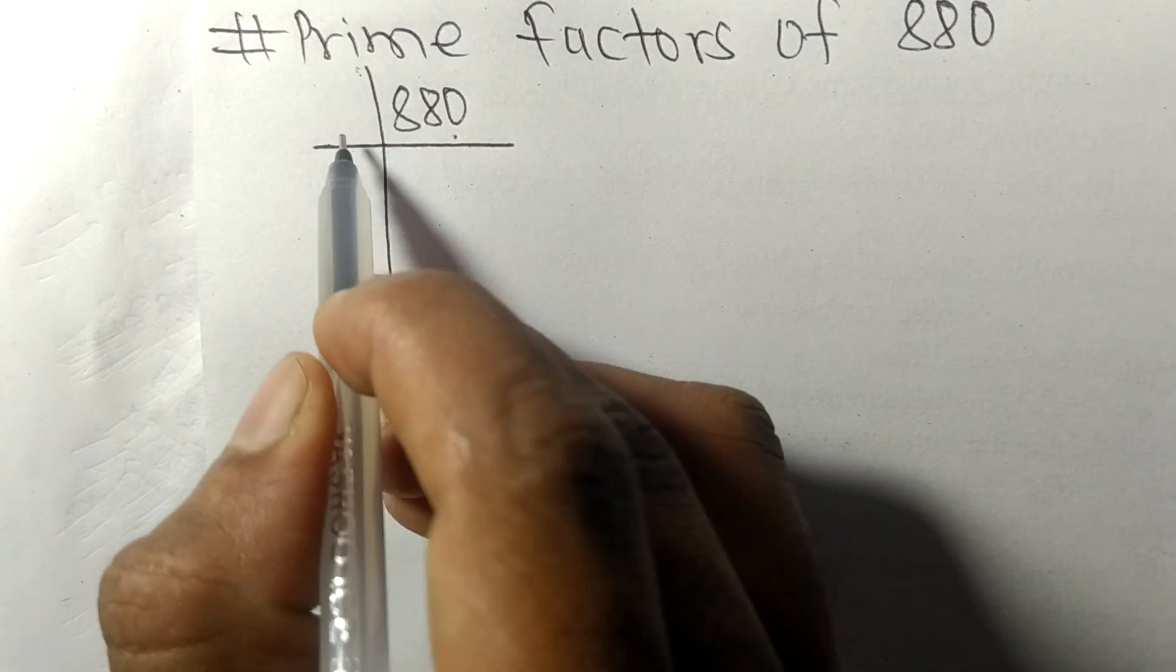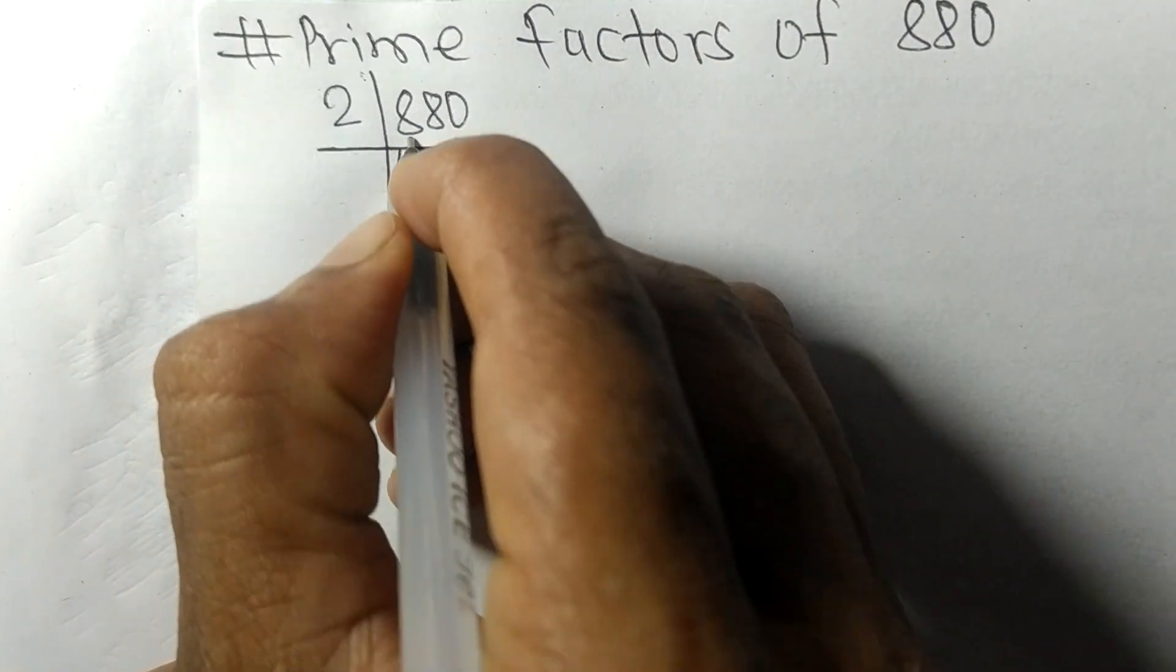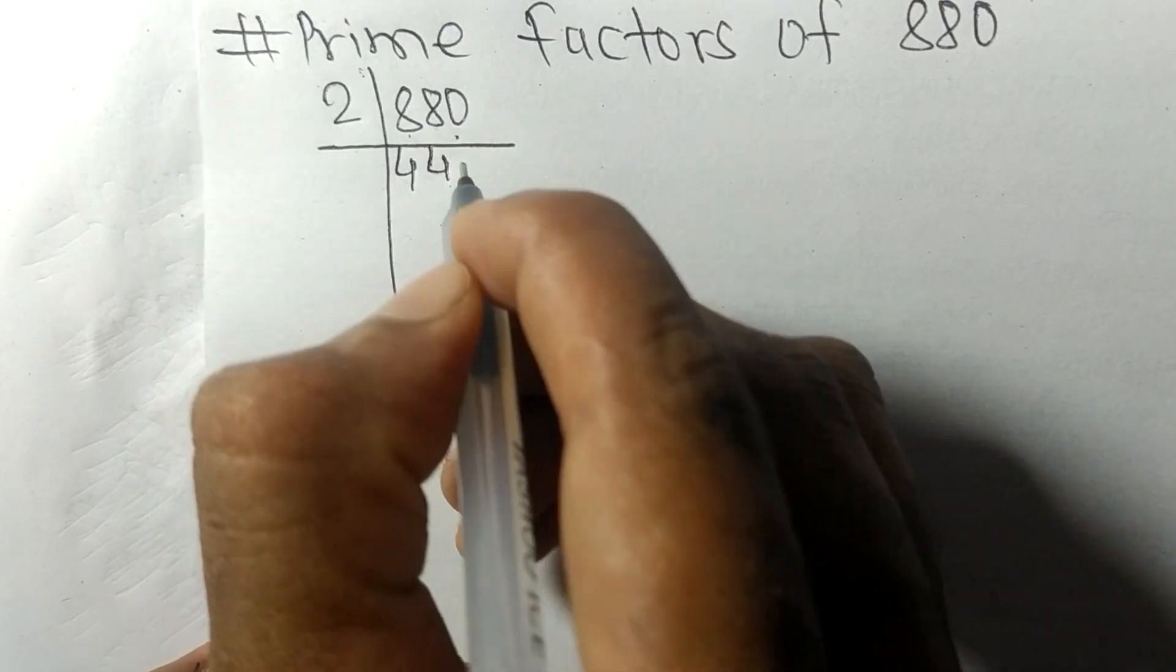880 ends in 0, so it's divisible by 2. 2 times 4 is 8, 2 times 4 is 8, 2 times 0 is 0. We get 440.